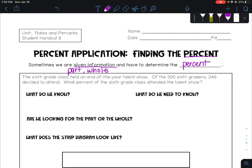So for our first example, the sixth grade class held an end-of-year talent show. Of the 300 sixth graders, 246 decided to attend. What percent of the sixth grade class attended the talent show?